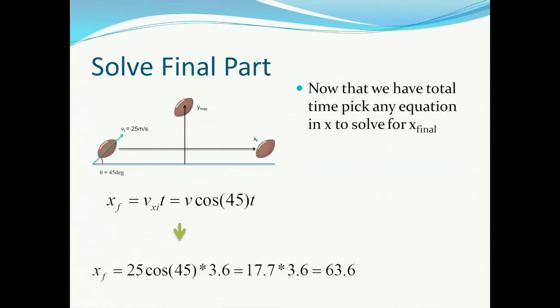At this point, we know everything except the total distance traveled in the x direction. But we have all the variables except for this. Therefore, we can pick any equation in the x direction that includes the final x position and solve for it. The most simple equation to choose would be that x final minus x initial is equal to the initial x velocity multiplied by the total time. Remember that x initial is 0, so we didn't show it in the equation below. Multiplying our answer from the previous slide, we get a total distance traveled in the x direction of 63.6 meters.